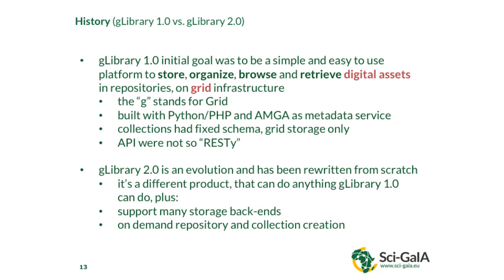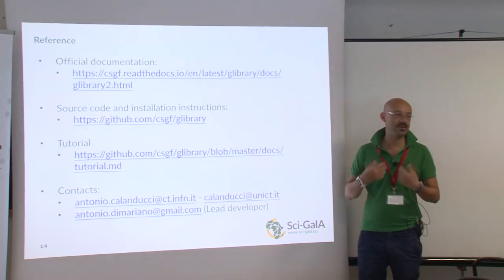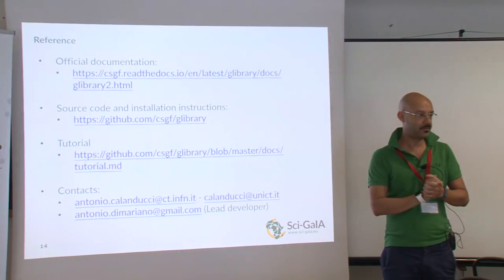Here you can find all the references for G-Library, especially the G-Library 2.0 documentation. Please make sure you are accessing the G-Library 2.0 documentation and not the old one. The source code is on GitHub, and I've also prepared a tutorial that I will run live after this presentation to show some of the REST APIs. If you want support, you can contact me, or Roberto, or Antonio Di Mariano, who is the lead developer of the platform.